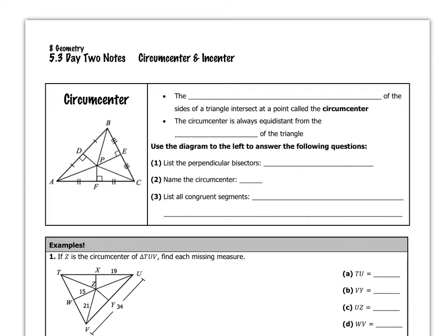The perpendicular bisectors, which we talked about in a previous lesson — you'll want to review those notes if you forgot what a perpendicular bisector is — of the sides of a triangle intersect at a point called the circumcenter of the triangle. The circumcenter is always equidistant from the vertices of the triangle.